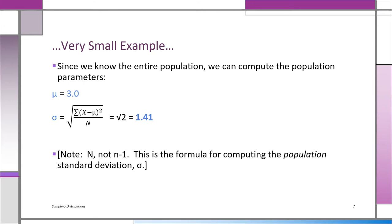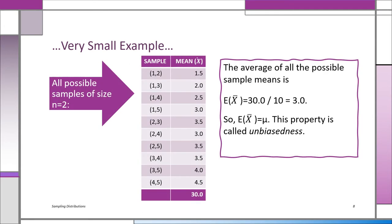Now we're going to look at the sample means. Look at all the different possible samples — there are only 10. You might get 1 and 2 with an average of 1.5; 1 and 3 with an average of 2; 1 and 4 giving 2.5; or 4 and 5 giving 4.5. The 10 possible sample means average out: add them all up, that's 30 divided by 10. The expected value of x-bar is 30 over 10, which is 3.